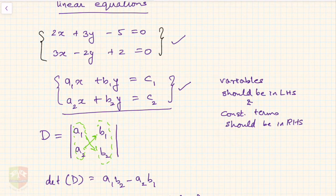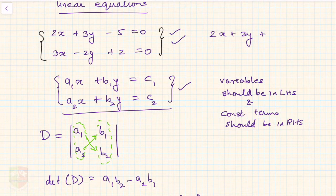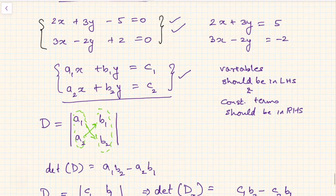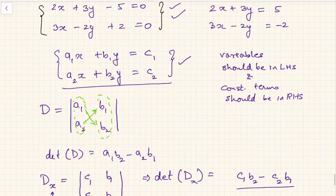Now let us take the two examples given. I need to rearrange the given equations into the required format. The equation 2x + 3y − 5 = 0 can be written as 2x + 3y = 5, and the other equation 3x − 2y = −2. Let us now solve these equations using Cramer's Rule.